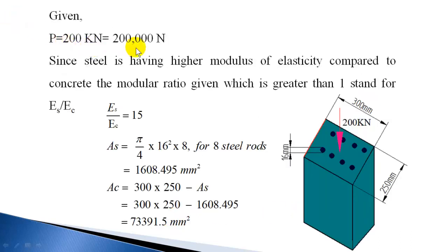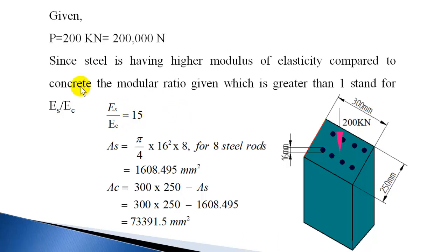The load given is 200 kN, which can be written as 200,000 N. The modular ratio is given as 15. Modular ratio can be expressed as Es/Ec or Ec/Es, but here it should be identified as Es/Ec, because steel has a higher Young's modulus than concrete. If it were Ec/Es it would be less than one. So Es/Ec = 15.